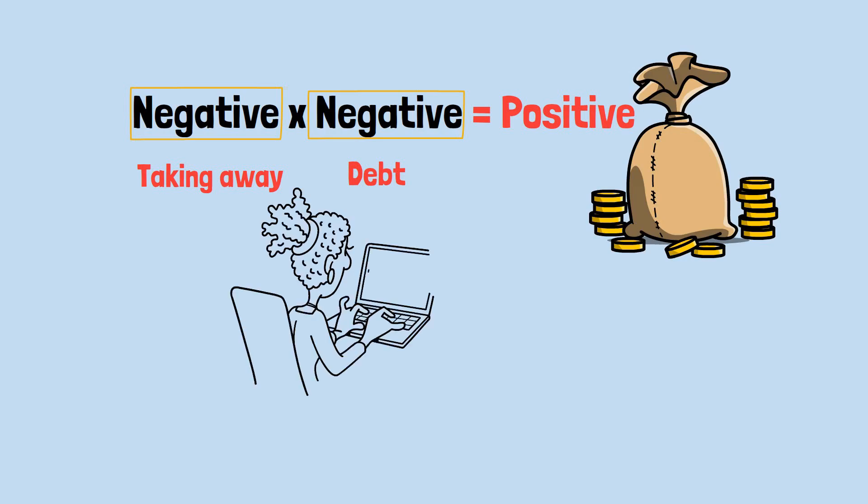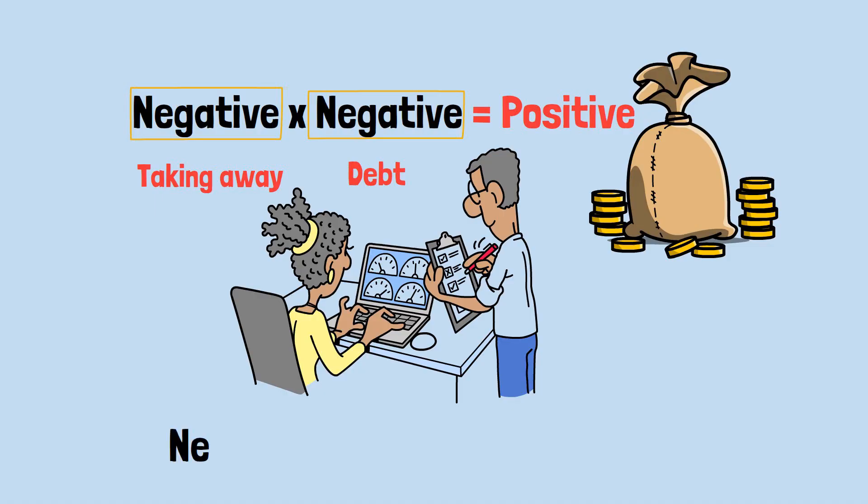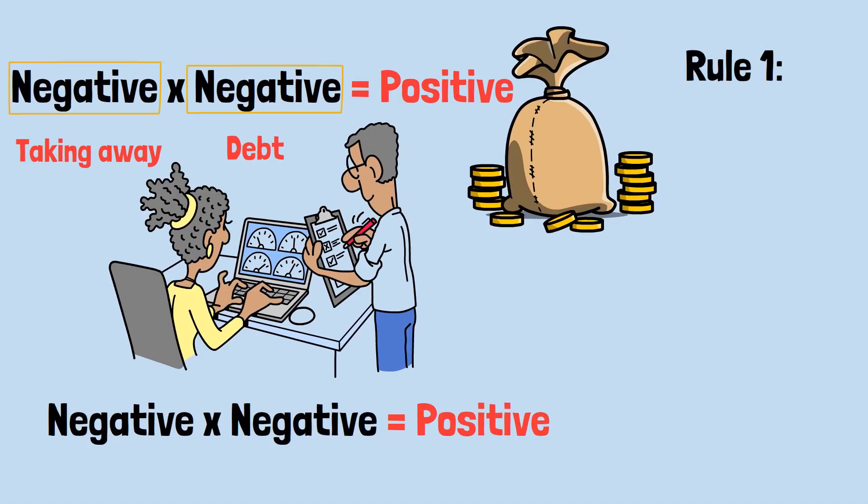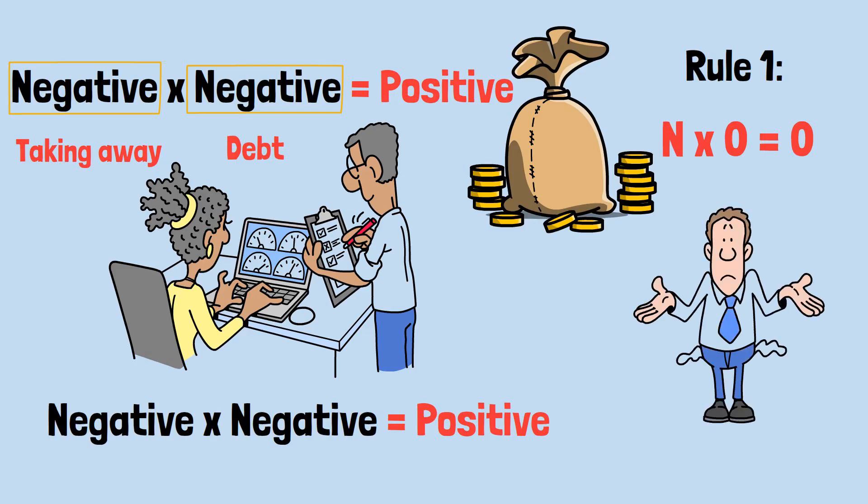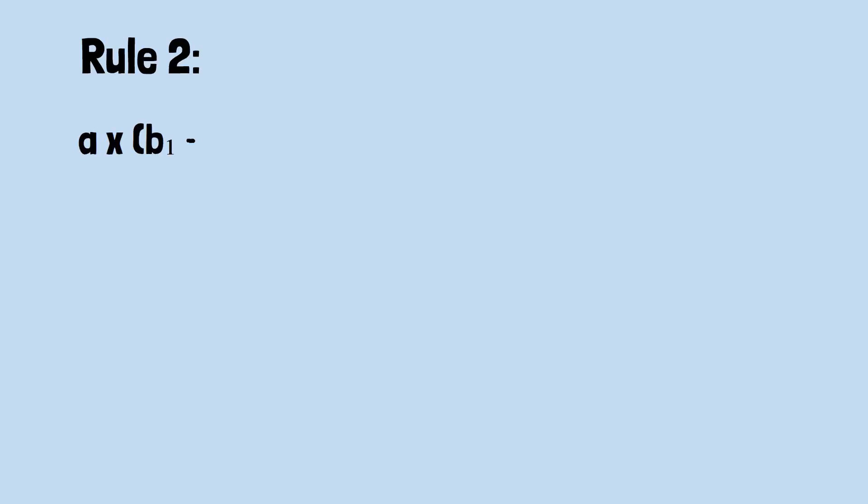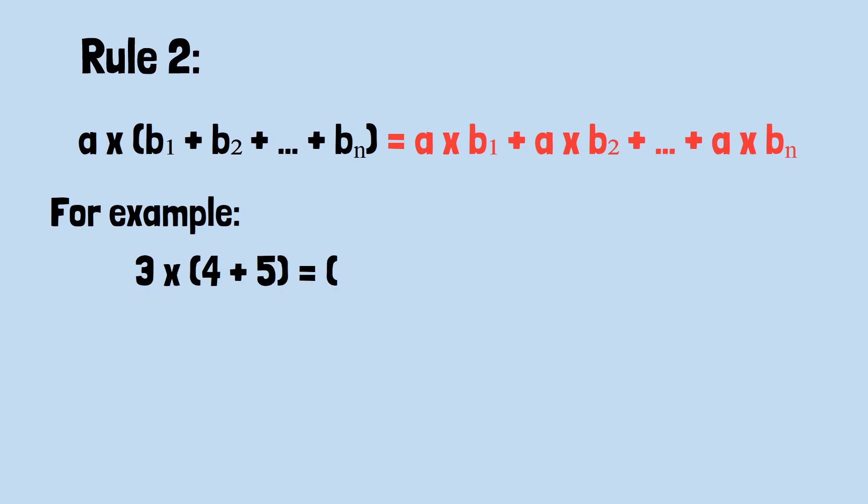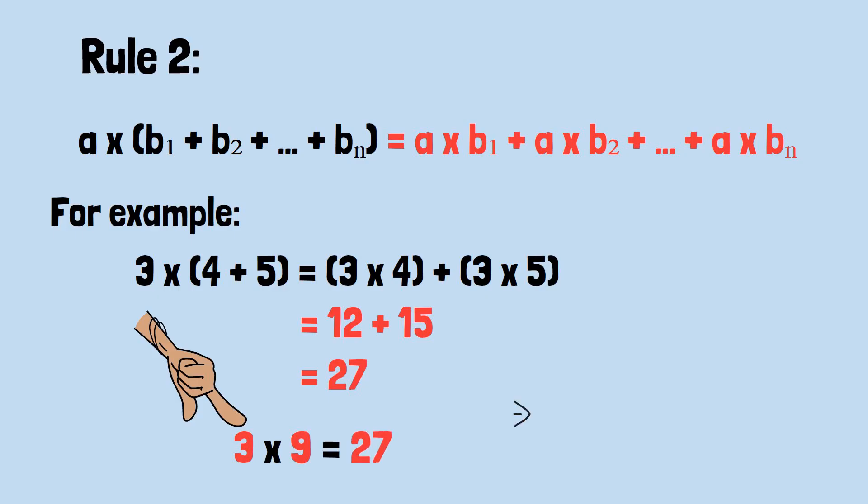While real-world examples help our intuition, mathematics also has a logical proof for why negative times negative must equal positive. We start with Rule 1: any number times 0 equals 0. This should make sense. If you have 0 groups of something, you have nothing. Rule 2, the distributive property: when you multiply one number by a group of numbers added together, it's the same as multiplying that number by each part separately, and then adding those results together. For example, 3 × (4 + 5) = 3 × 4 + 3 × 5, which is 12 + 15, giving us 27. Or you could just calculate 3 × 9 = 27. Both ways give the same answer.